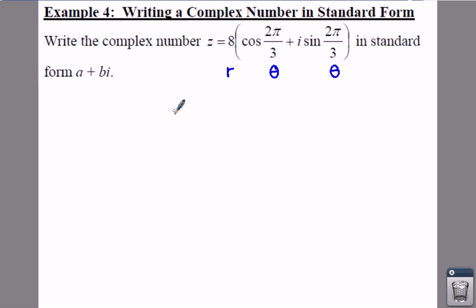So if we just list out, or if we know your r and your theta, so if we say r is 8 and theta is equal to 2π over 3...